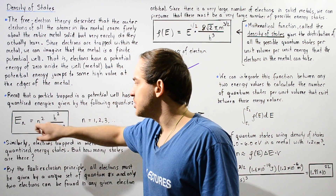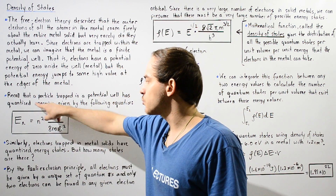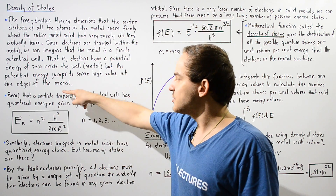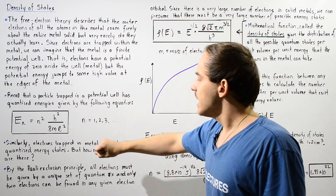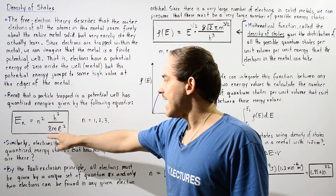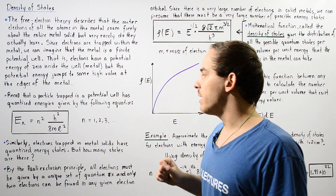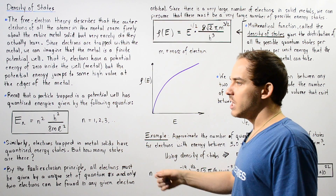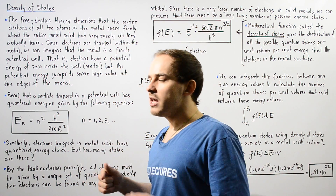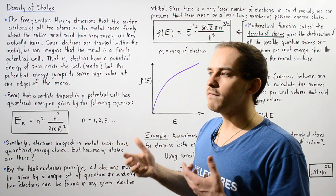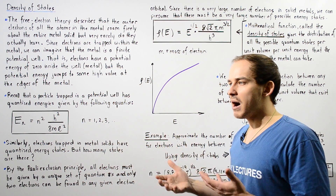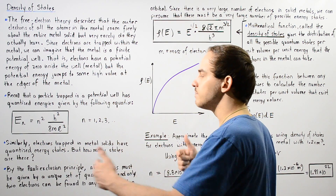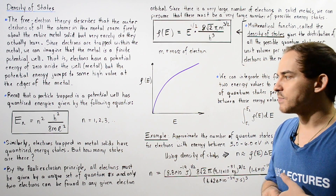The energy E is equal to N squared multiplied by h squared — Planck's constant squared — divided by 8 multiplied by m, the mass of the electron, multiplied by L squared, where L is the width of that rigid box, the width of the metal we're considering.